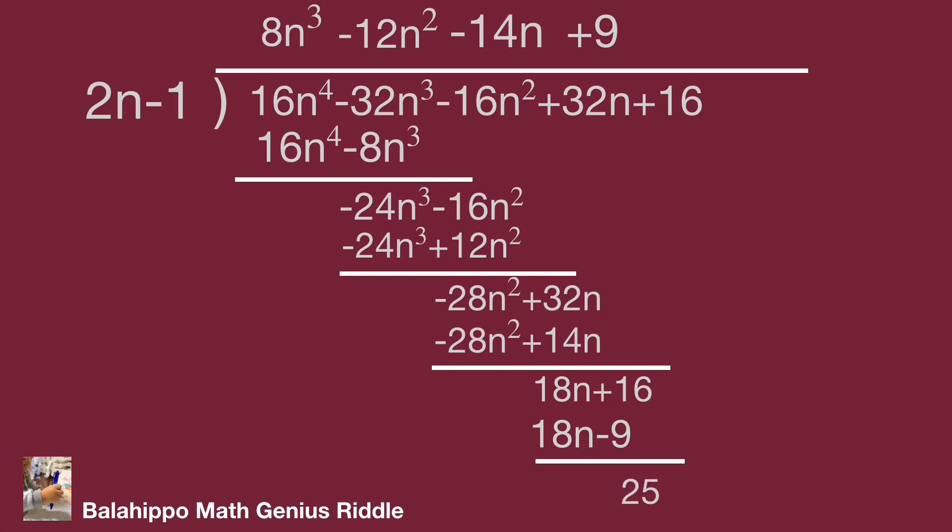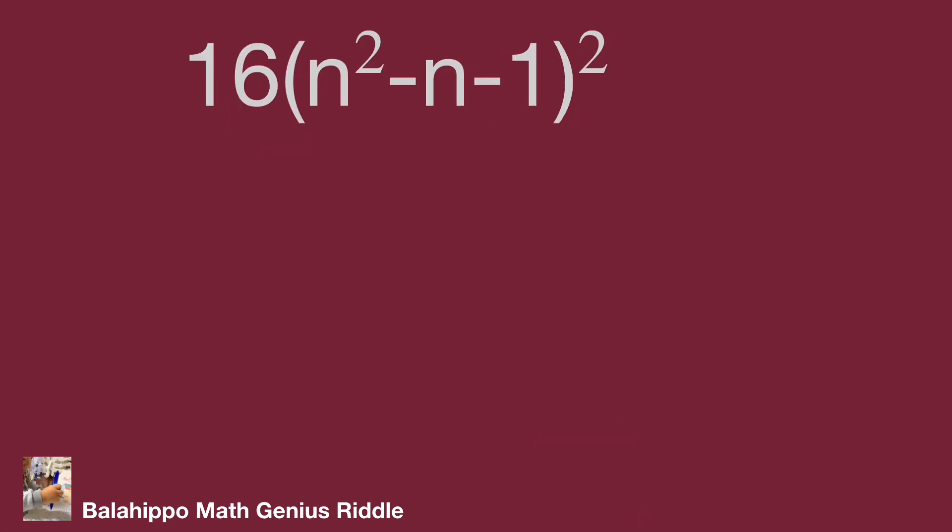Then back to our equation. It can be shown as 16 times quantity n squared minus n minus 1 squared equals quantity 2n minus 1 multiplied by 8n cubed minus 12n squared minus 14n plus 9, plus 25.